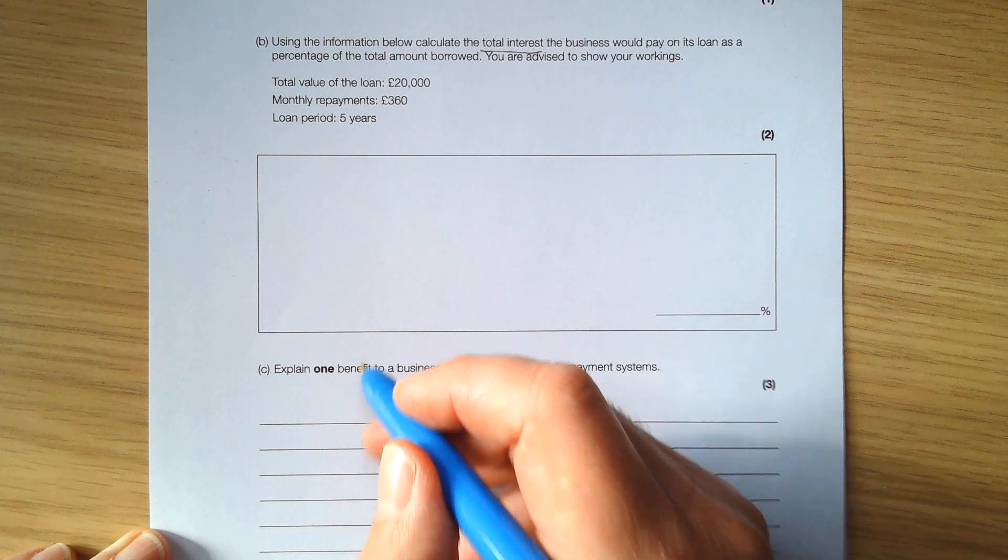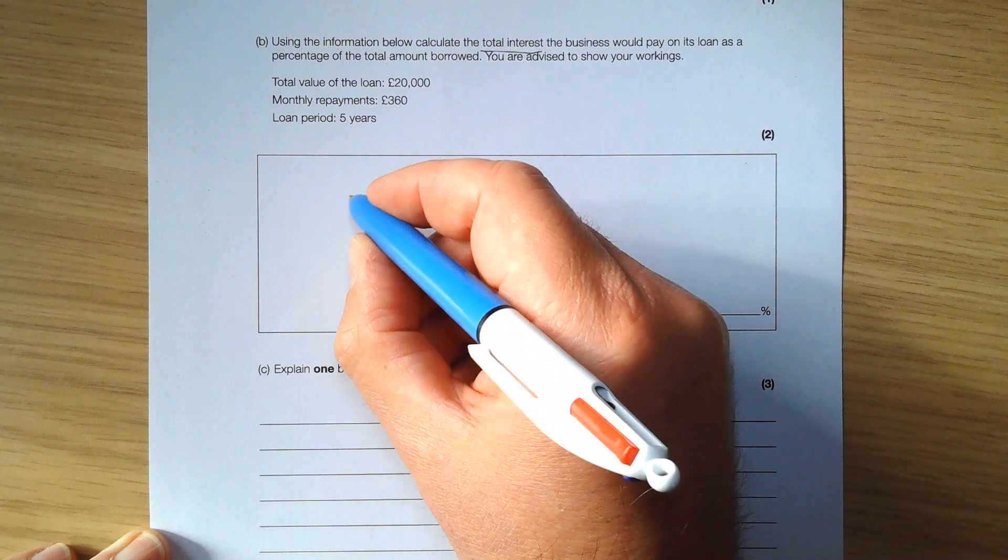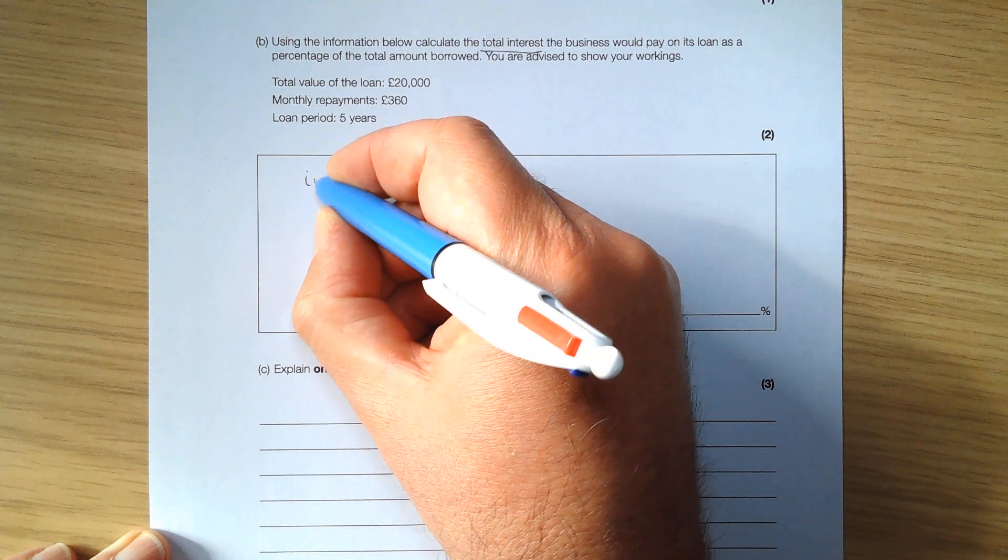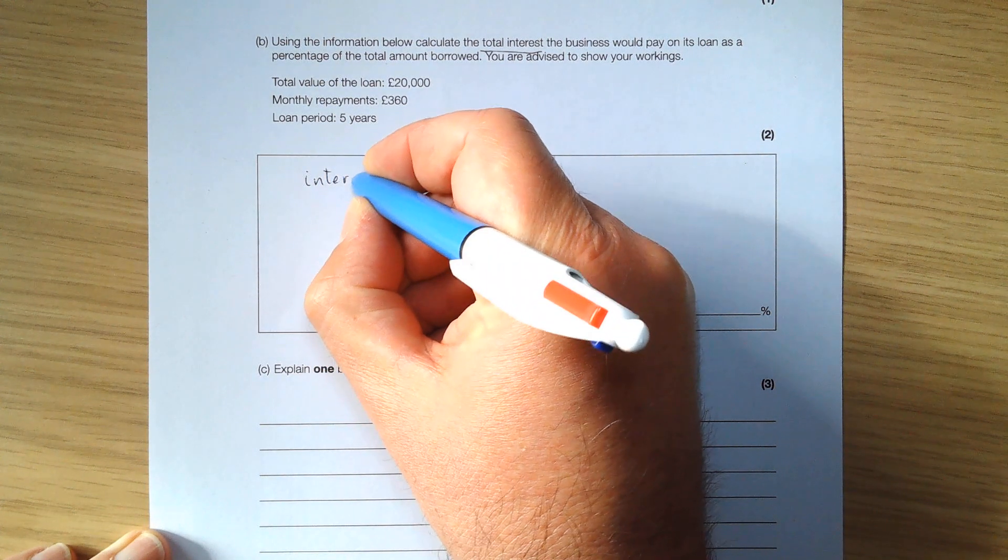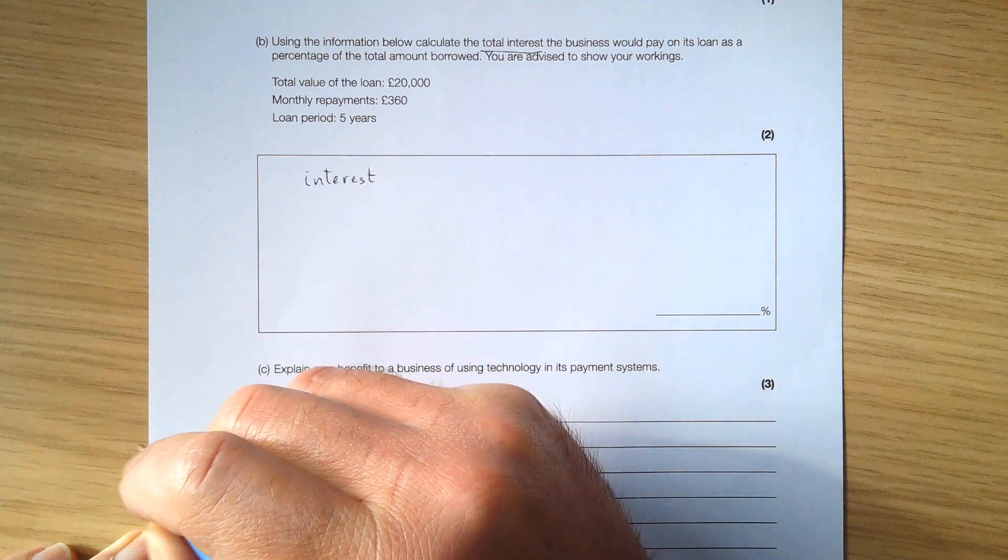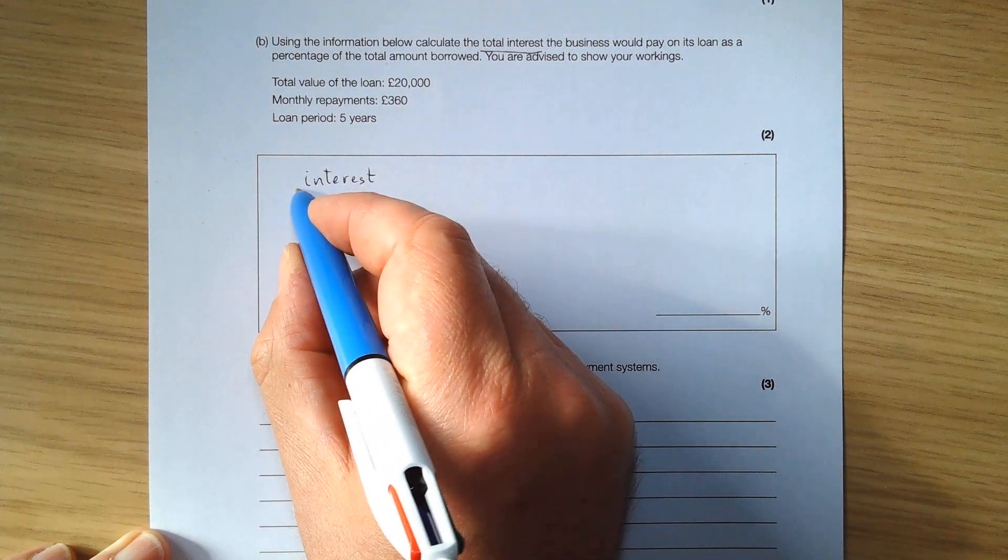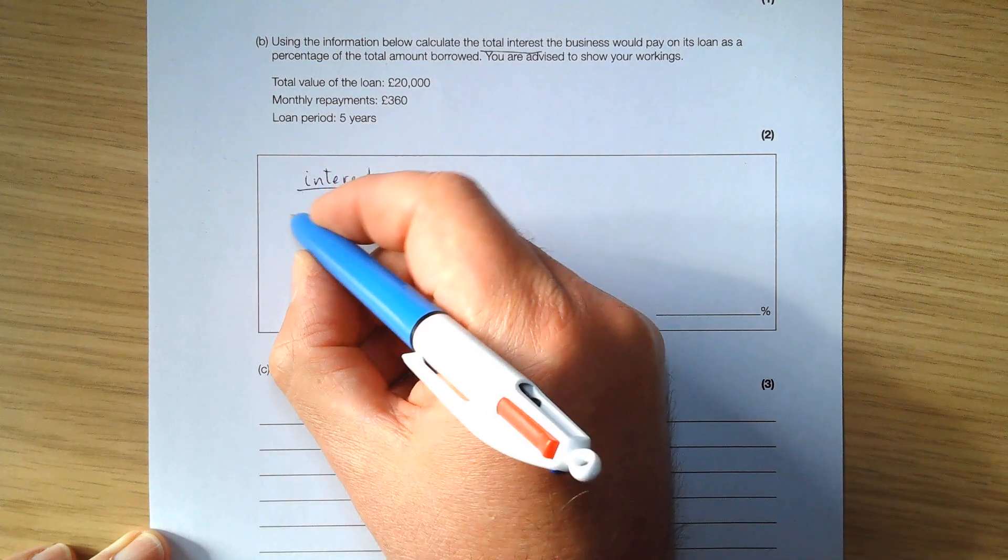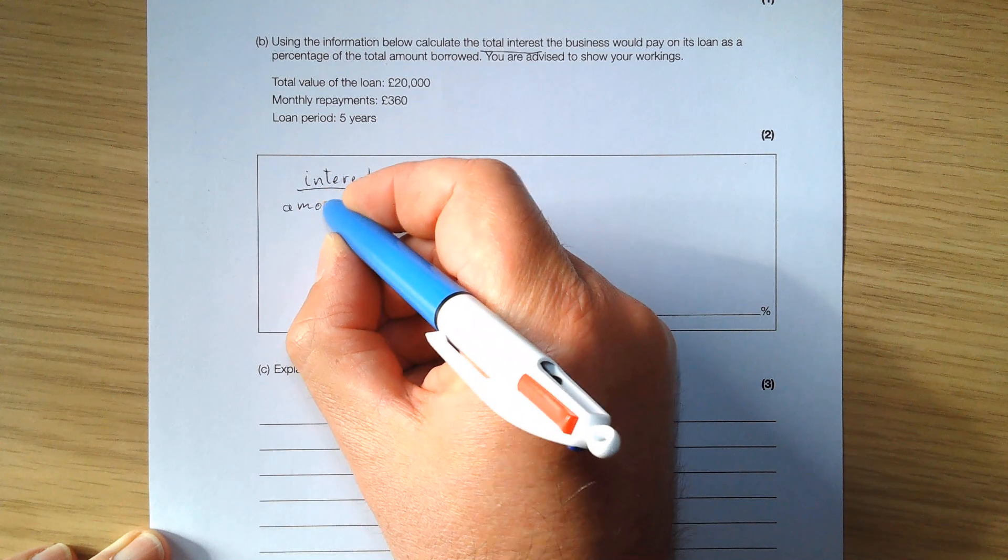To calculate a percentage, you need to divide the amount of the number you want, which in this case is the total interest, by what you want to work it out of, which is the amount borrowed.